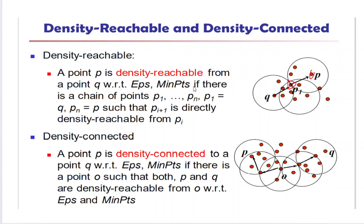What is density connected? If we have points P, O, and Q, where P is directly density reachable to O — meaning P is within the epsilon neighborhood of O and O contains the minimum number of points — and O is directly density reachable to Q, then we can say that point P is density connected to point Q. These two terminologies, density reachable and density connected, are very important.